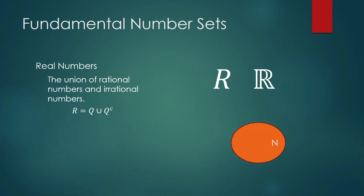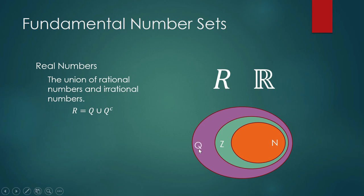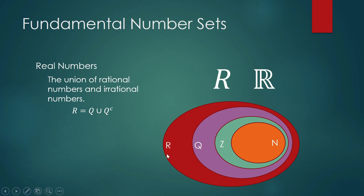In the schematic diagram of fundamental number sets, the smallest set is the natural numbers. The natural numbers are contained in the larger set of integers, with the additional elements being the negative integers and zero. The integers are contained in the larger set of rational numbers, which also includes numbers with a decimal part. The set of real numbers is even larger and contains all rational numbers plus the irrational numbers outside Q.